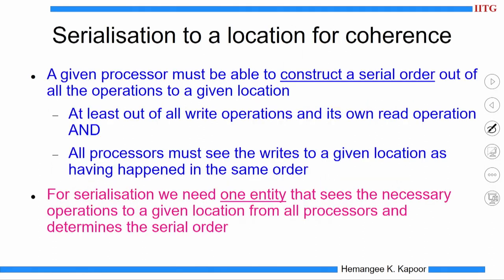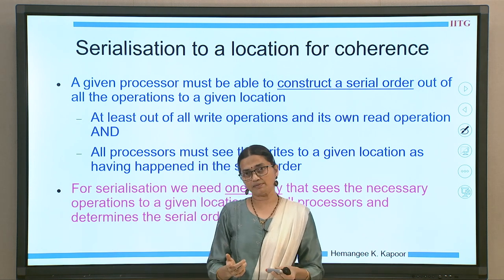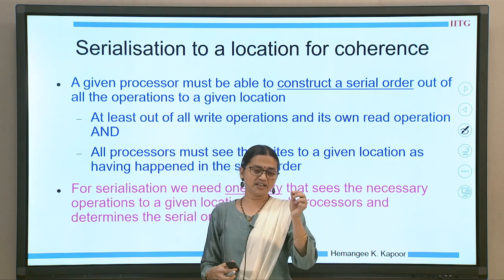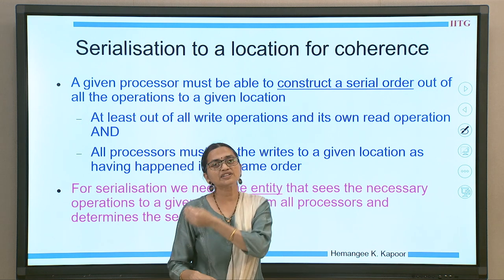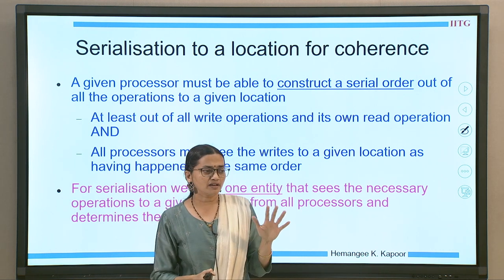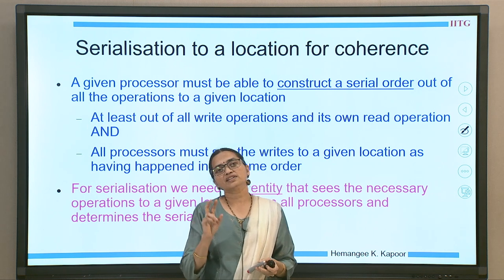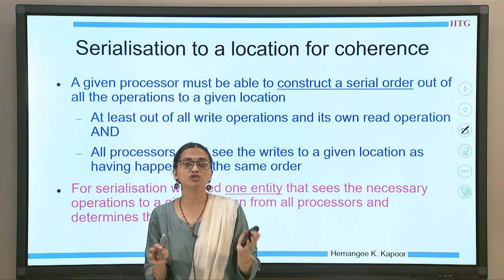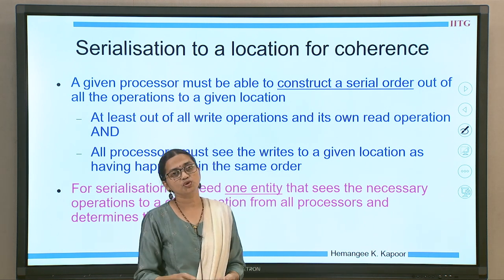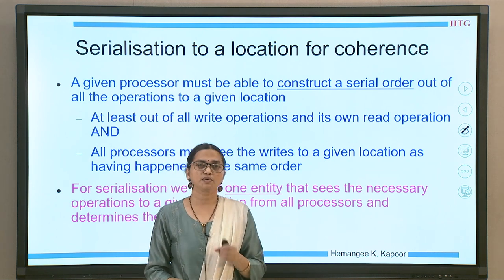Let us address serialization to a location for coherence. A quick recap: in a bus-based system, all requests went onto the bus and we could string them together to get one serial order of actions on a particular data block — processor 1 did the read, then 2 did the write, then 3 did the read, and so on. We could derive a serial order for one location because we had a single entity: the bus. In a scalable network, we do not have that concept. You can pause the video and think about how to manage serialization in such a big distributed network.